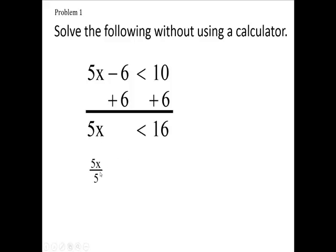So it's going to be 5x over 5. Here you have less than, and we're going to have 16 over 5. Final answer then, 5x over 5 is x, and we have less than 16 fifths.